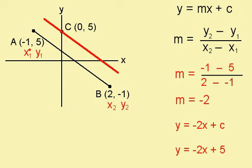I've called A x1, y1 and B x2, y2. I've found the gradient, which is minus 2. I know that the gradient of this line is minus 2, so it's y equals minus 2x, and I know that it cuts the y-axis at 5, so c must be 5.